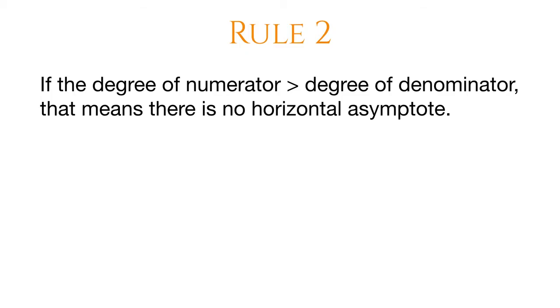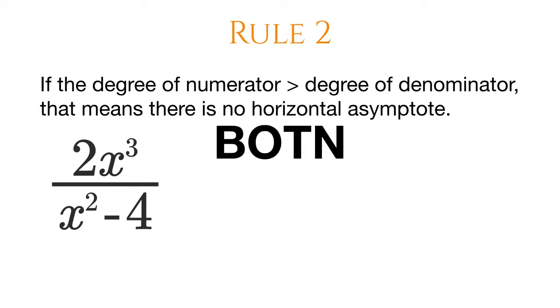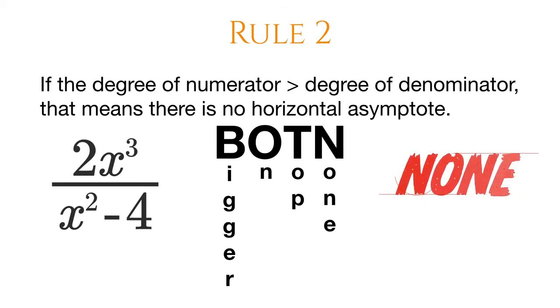Rule number 2. If the degree of the numerator is larger than the denominator, then that means that there is no horizontal asymptote. So that would be like this. If you look right here, third degree compared to second degree, the bigger one's on top. So we use bottom. Bigger on top, none. And in that case, there is no horizontal asymptote.